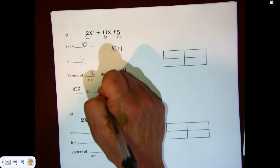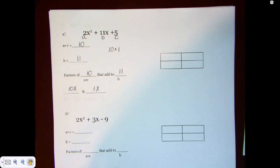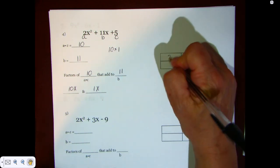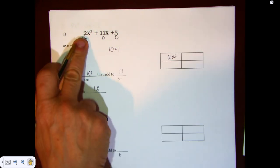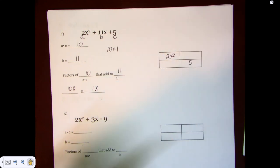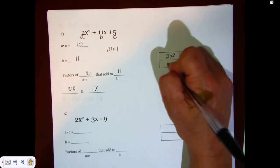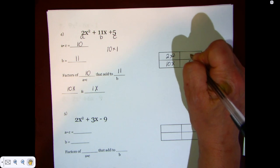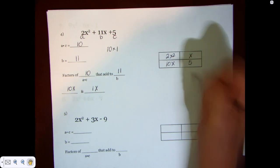X and X. Now we're going to put it in our table. We're going to go 2X squared, that's the first term. The last term is 5. And I always say, it does not matter where you put the 10X. It does not matter where you put the X or the 1X.